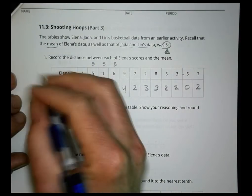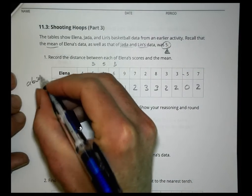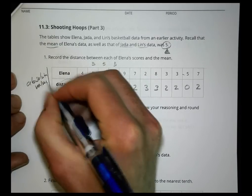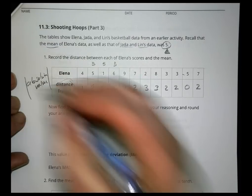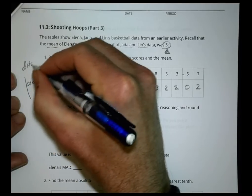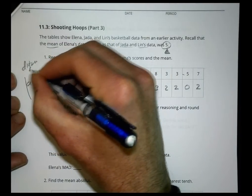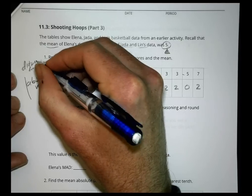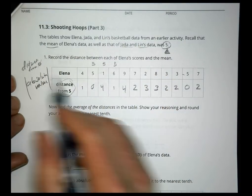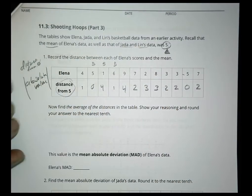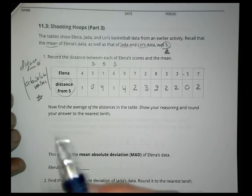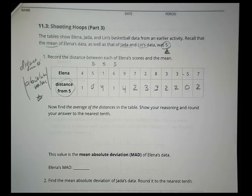Think about this: when we talk about absolute value, absolute value is the distance from zero. Here we're talking about distance from 5, so it's similar to absolute value. That concept will come up again later when you talk about the actual formula.